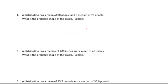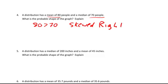Okay sometimes they give you numbers instead of a graph. You have to explain what the shape is going to be. Well we have a mean of 80 and a median of 70. So 80 is going to be greater than 70, so it's probably going to be skewed right. And the reason? The mean follows the skew.